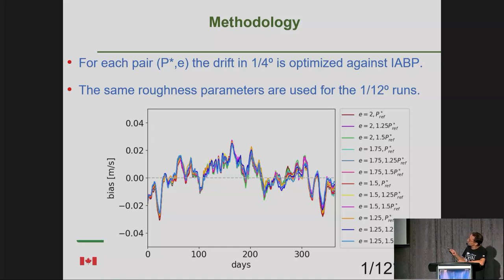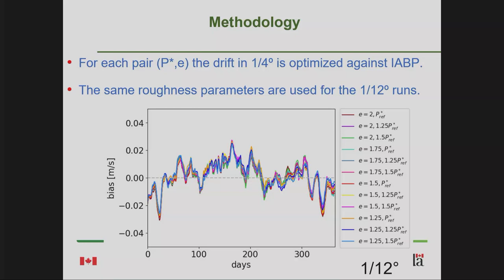Going back to the methodology for the optimization of drift — this is done at 1/4 of a degree because it's faster. We optimize the daily drift against drifting buoys over one year. This shows the bias with the IABP buoys. You can see there's a seasonal cycle in our bias — it's unclear why, possibly our atmospheric data. But the mean is close to zero, and you have our 12 experiments here. We find roughness parameters at 1/4 of a degree, and then apply these at 1/12th of a degree.